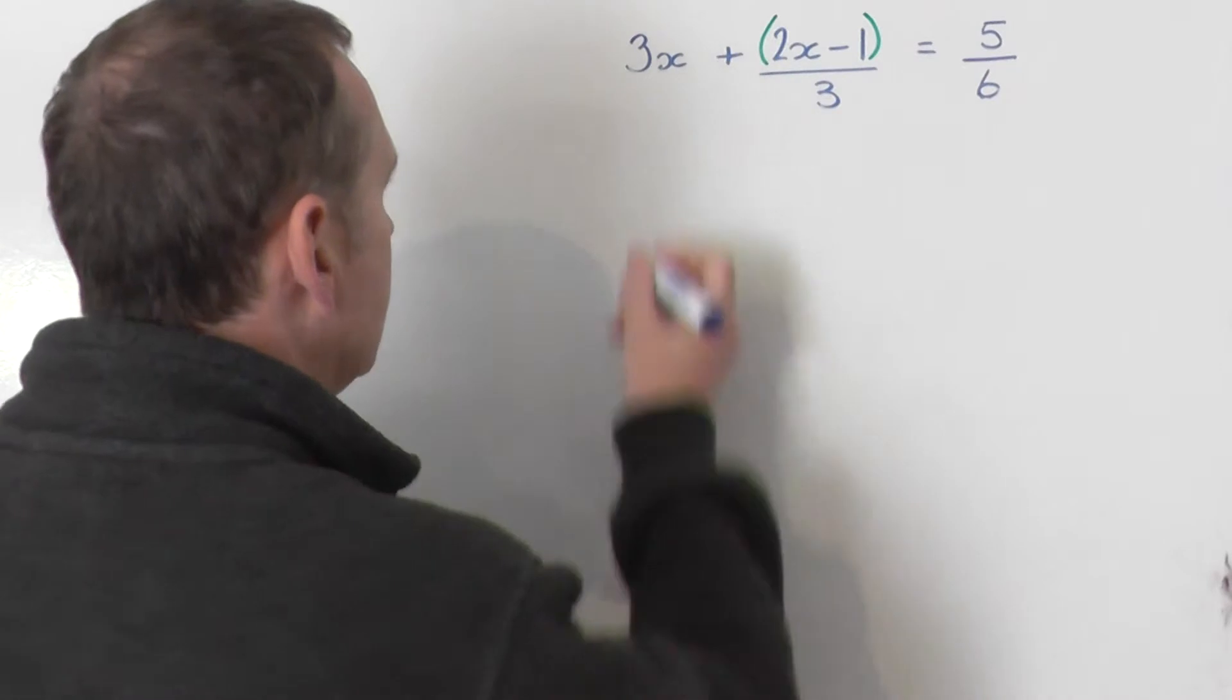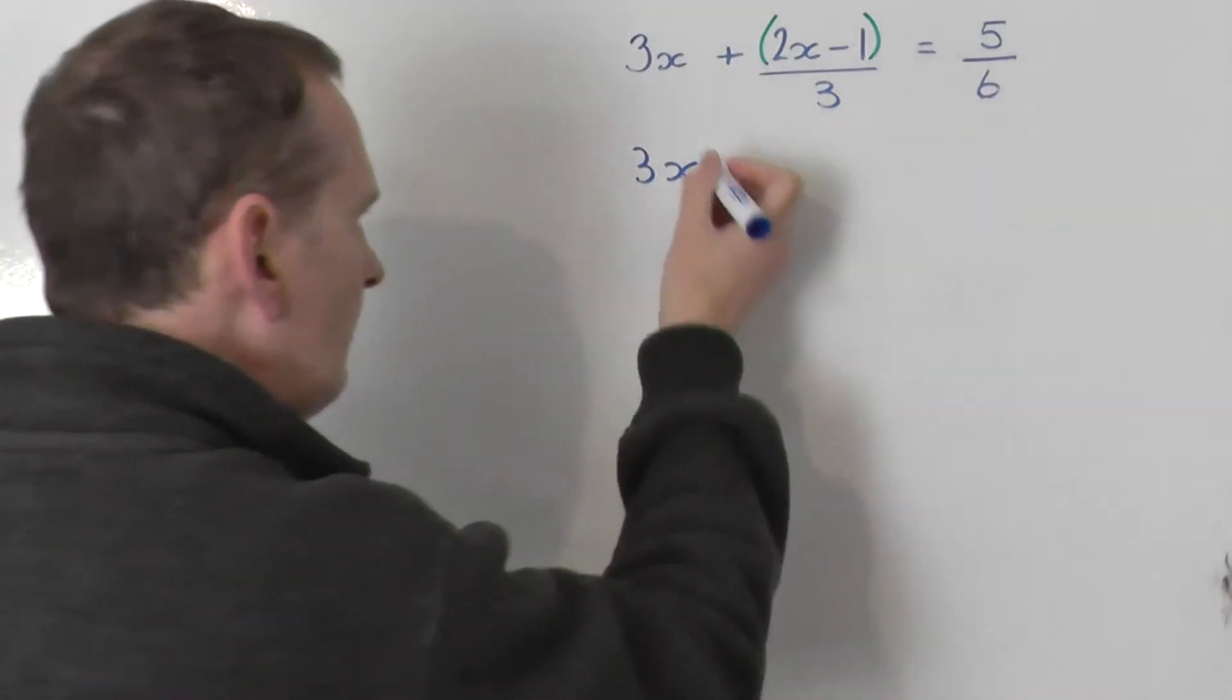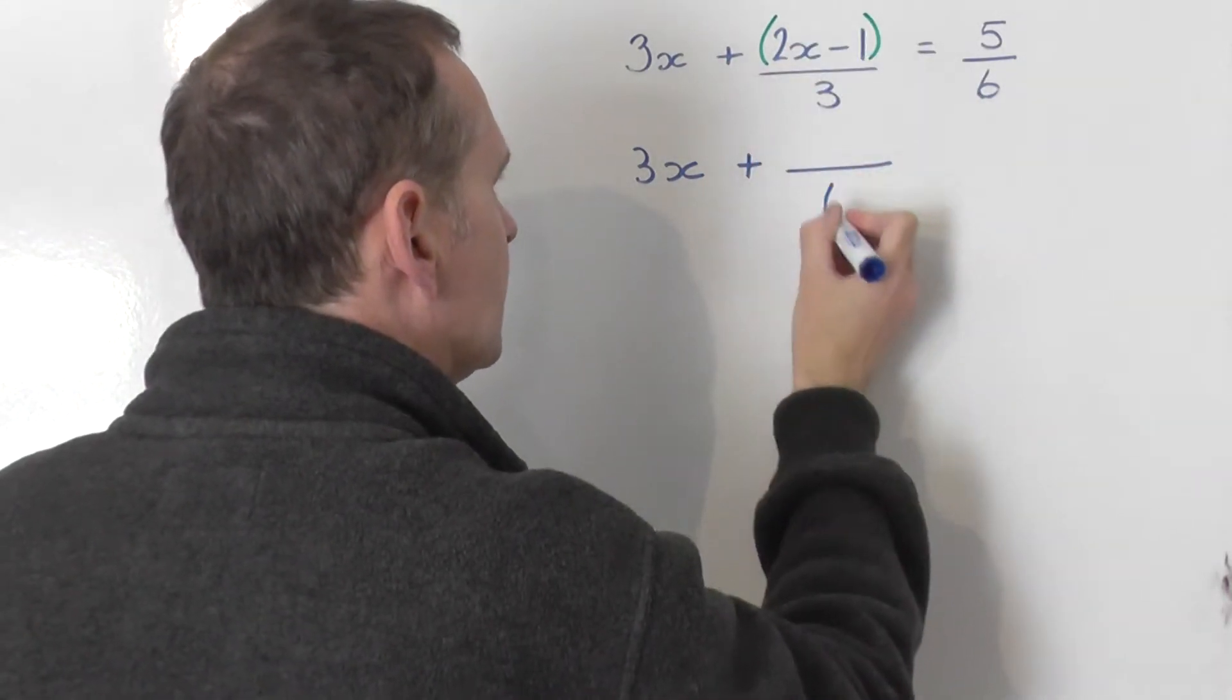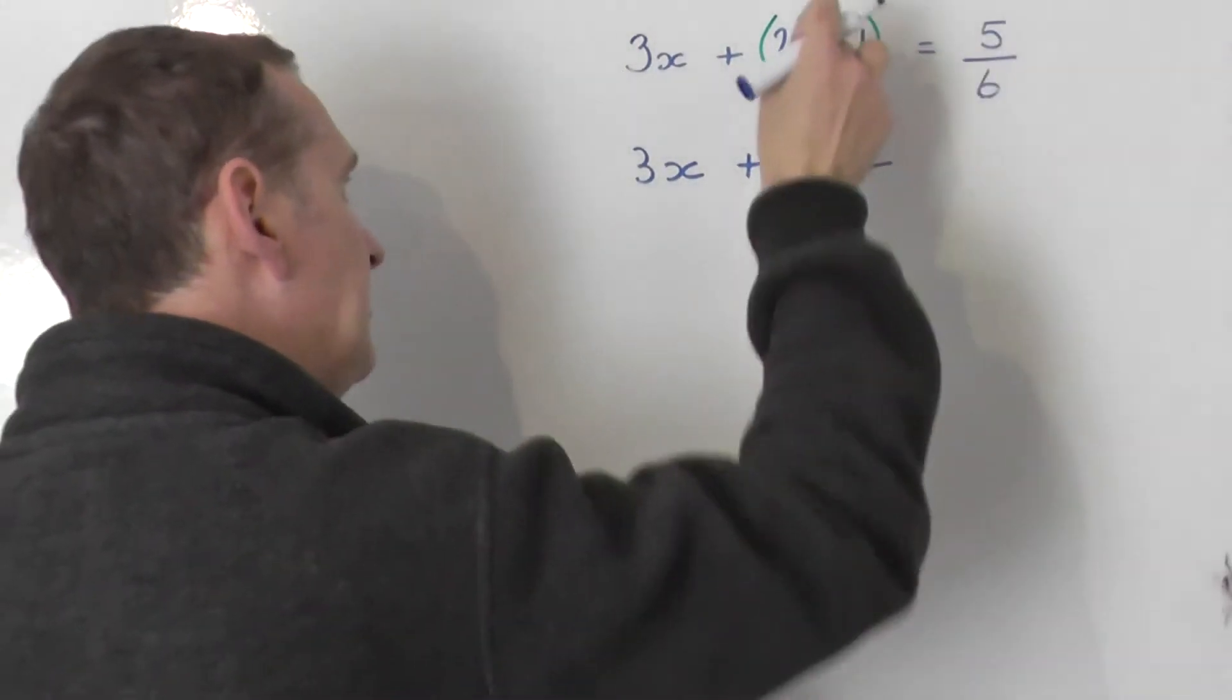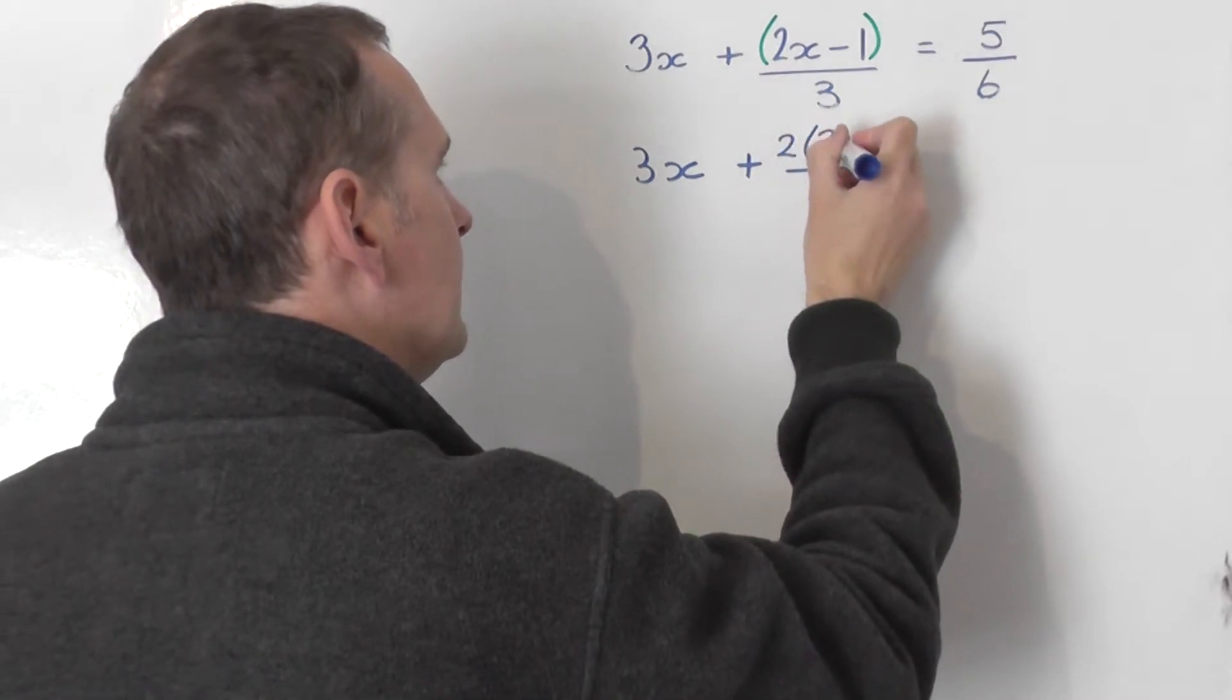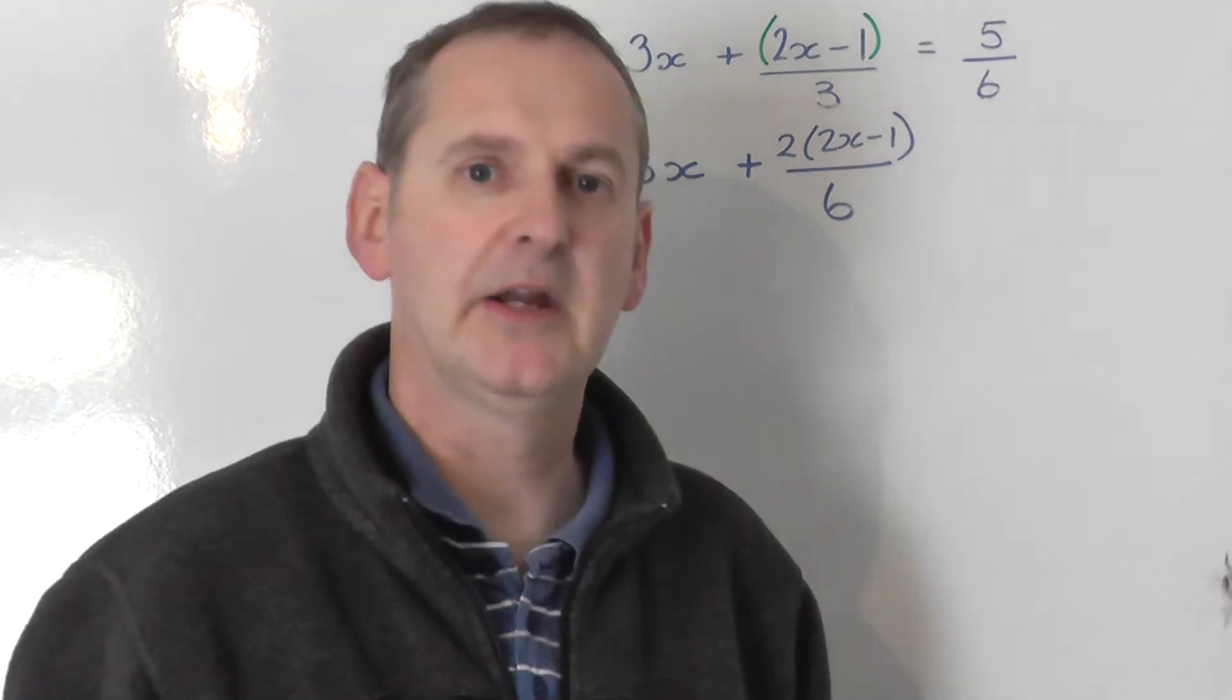So what I'm going to do is leave the 3x unchanged. I'm not going to change that for the moment. I'll put a plus sign down. I'm going to rewrite this fraction with a 6 on the bottom line, which is the LCM. So I need to double the 3 to get 6, so I have to double the top line. So I'm going to take the bracket and simply double it, which means I get 2 lots of the bracket - 2 lots of 2x minus 1.